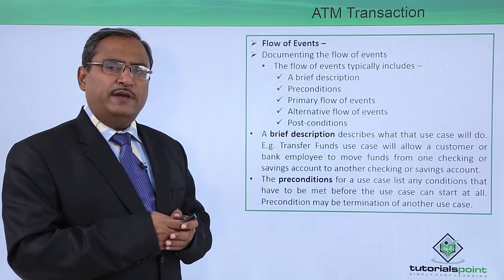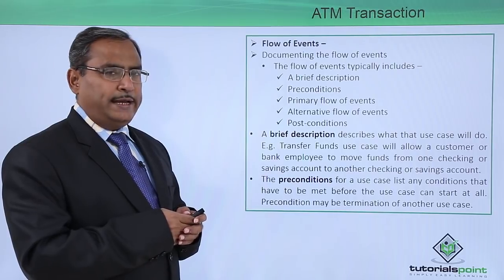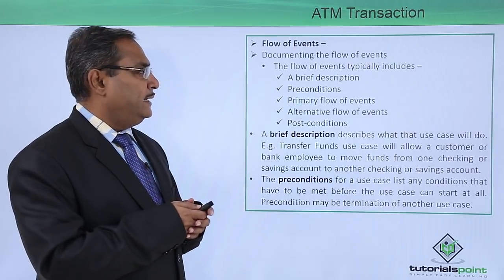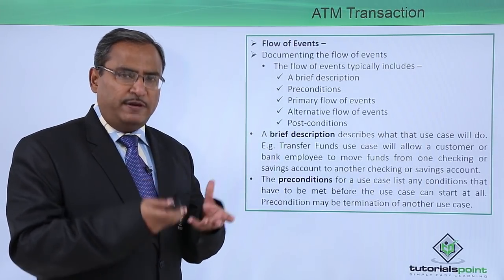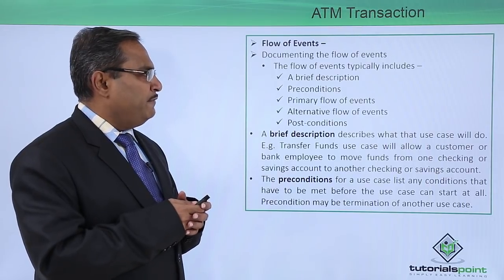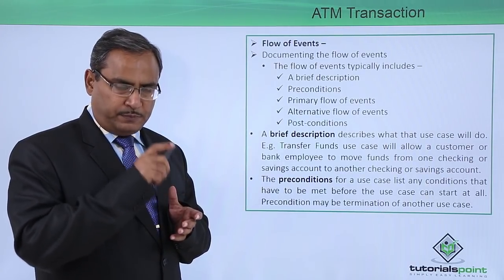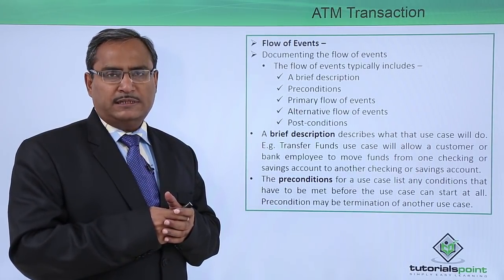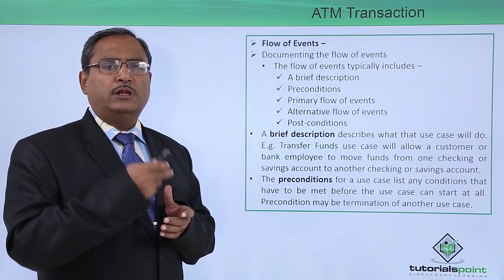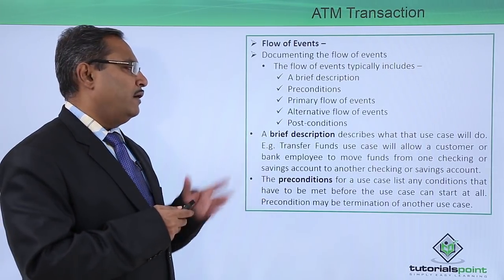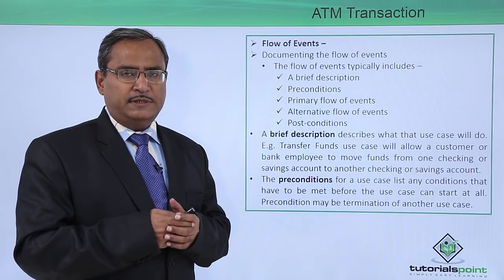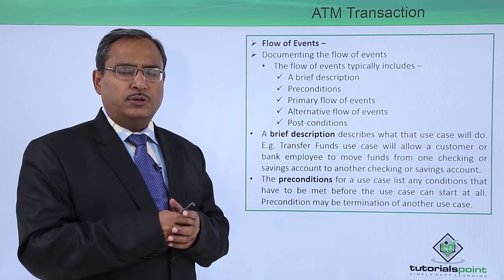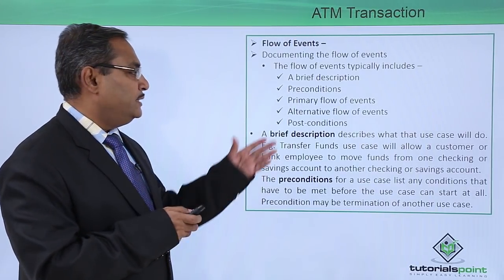Documenting the flow of events: the flow of events typically includes a brief description of the purpose of that event, preconditions defining when the event can take place, the primary flow of events describing what will take part, an alternative flow of events depending on conditions being true or false, and post conditions describing what outputs and effects will be there on the system after completion.